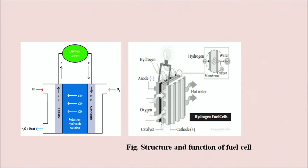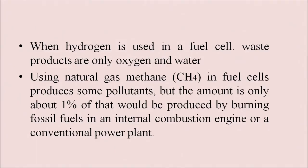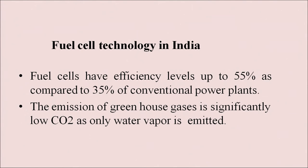In order to maintain the reaction, hydrogen and oxygen are added as required. When hydrogen is used in a fuel cell, the only waste products are oxygen and water. Using natural gas like methane in fuel cells produces some pollutants, but the amount is only about 1% of that produced by burning fossil fuels in an internal combustion engine or conventional power plant. Fuel cells have efficiency levels up to 55% compared to 35% of conventional power plants.